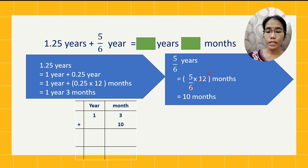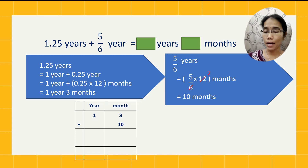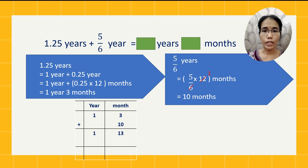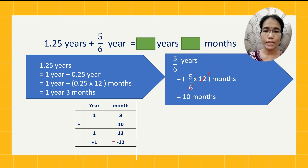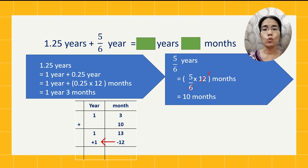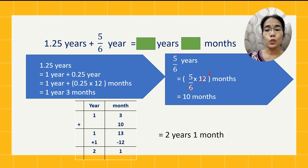Now add one year three months to 10 months. You'll get one year 13 months. In a year there are only 12 months, so take 12 from 13 — you'll have one month, and bring the 12 months to years as plus one. So your answer will be two years one month.